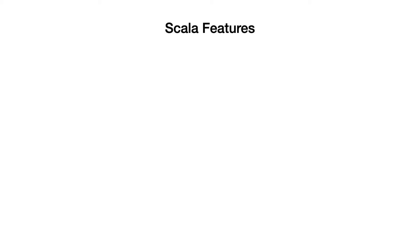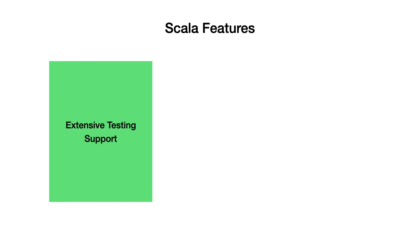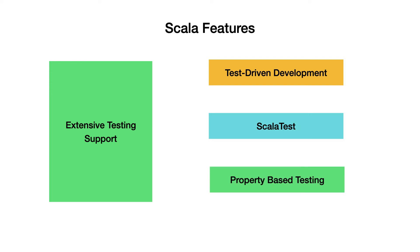Scala has a mature ecosystem when it comes to testing. The community itself is passionate about test-driven development and validating code using automated tests. You would find testing libraries such as ScalaTest offering different styles of writing tests, matching individual or team needs. It is a lot easier to test concurrent applications in Scala than in other languages. You can additionally define invariants in your code and let Scala generate and execute tests using property-based testing.